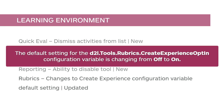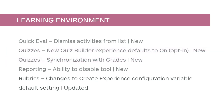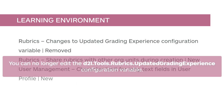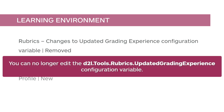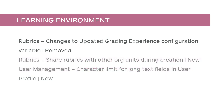The default setting for the D2L Tools Rubrics Create Experience opt-in configuration variable is changing from off to on. This configuration variable has three possible states: on, off, and on opt-in. The target date for turning this on and removing the ability to opt-out is November 2020. You can no longer edit the D2L Tools Rubrics Updated Grading Experience configuration variable. There is no impact to any client who has already set it to off or has not adopted the original rubric functionality. Changes to this variable will only be available for D2L support.